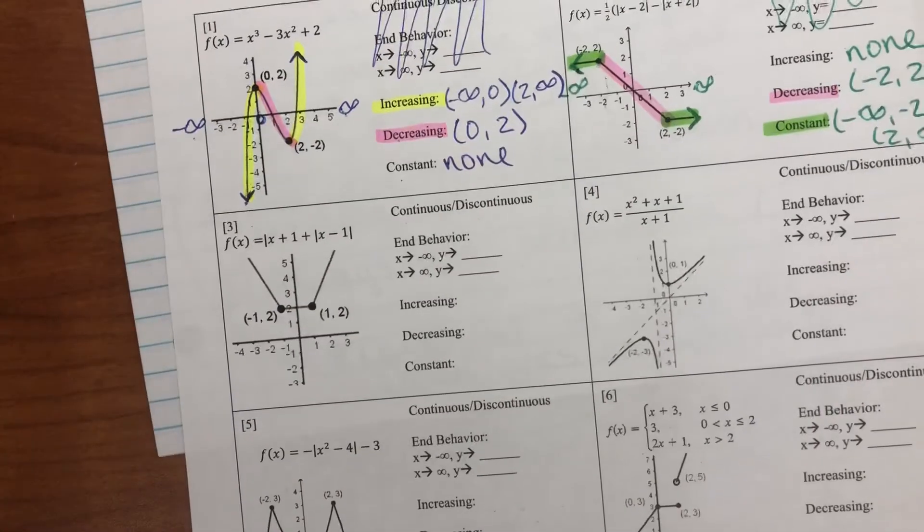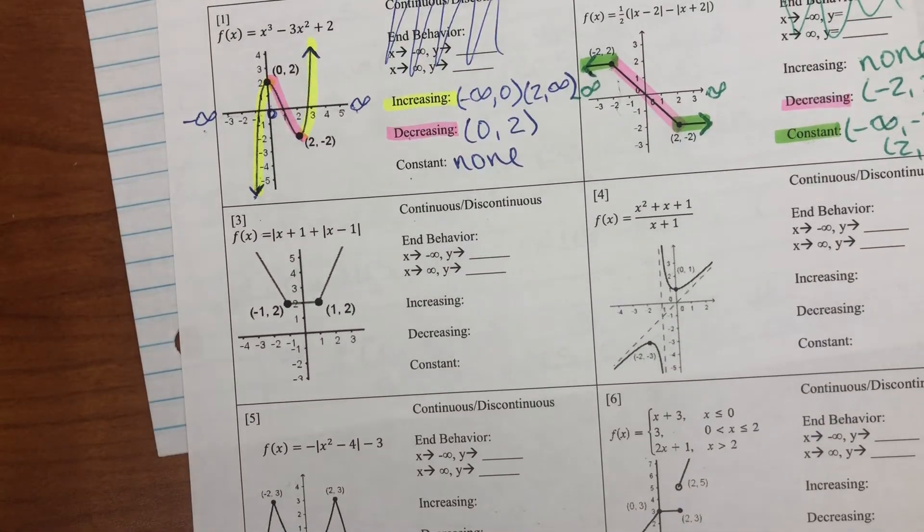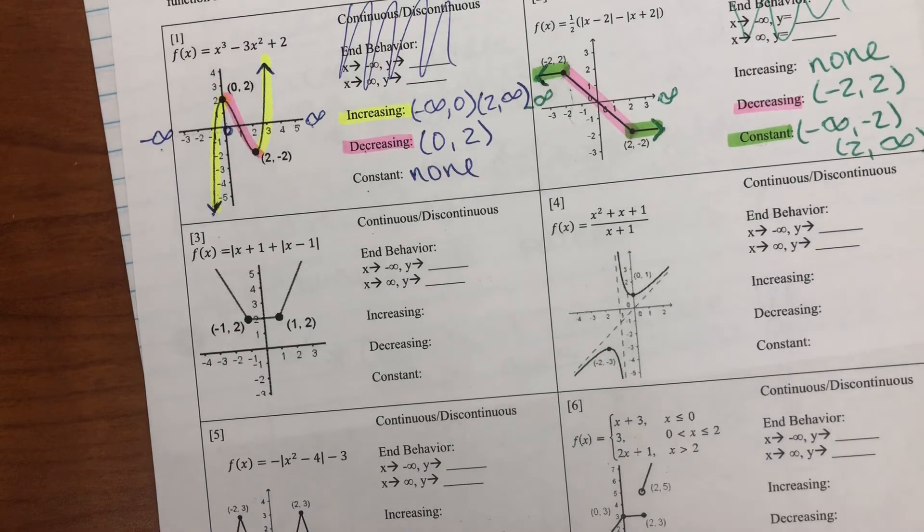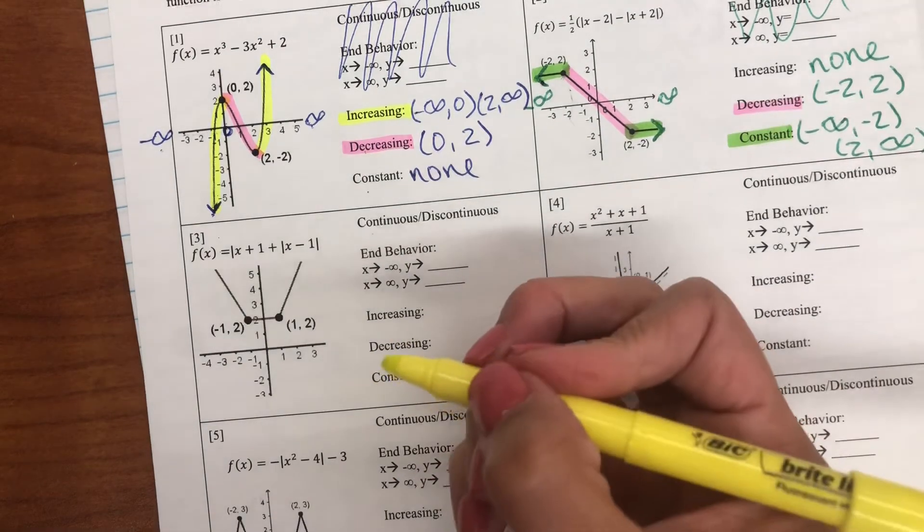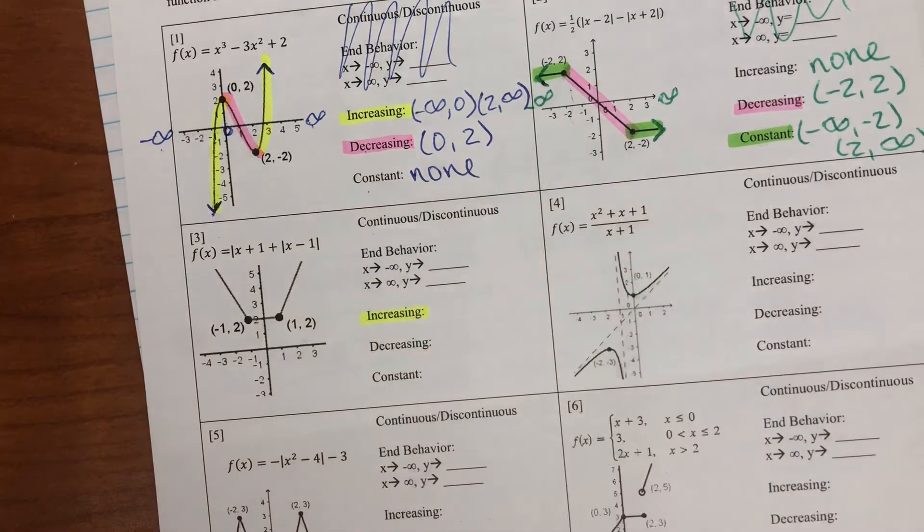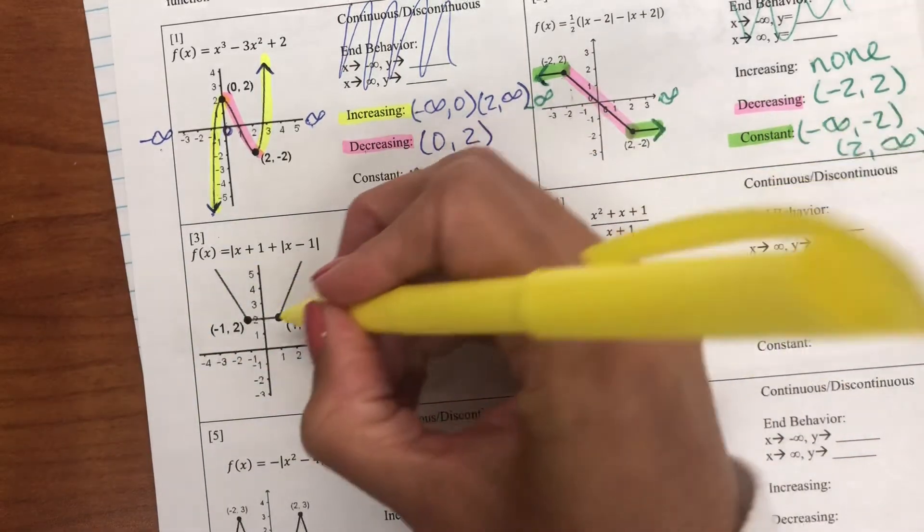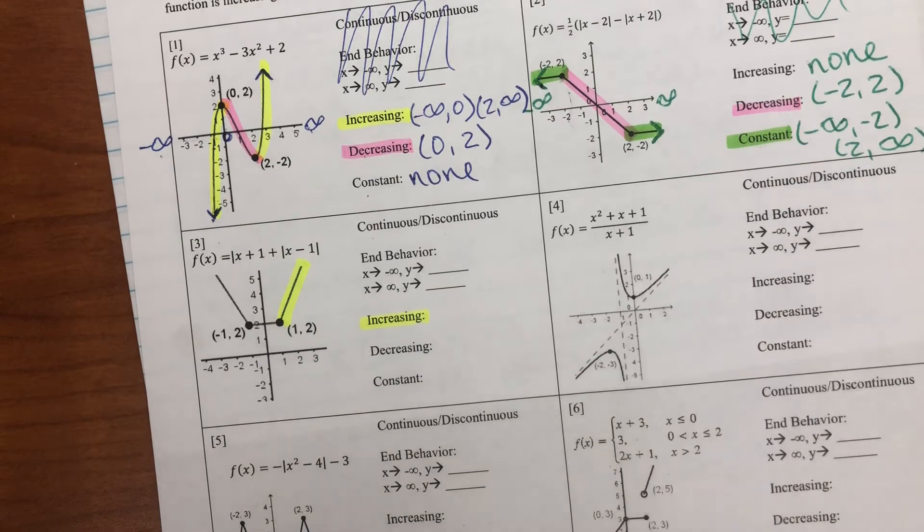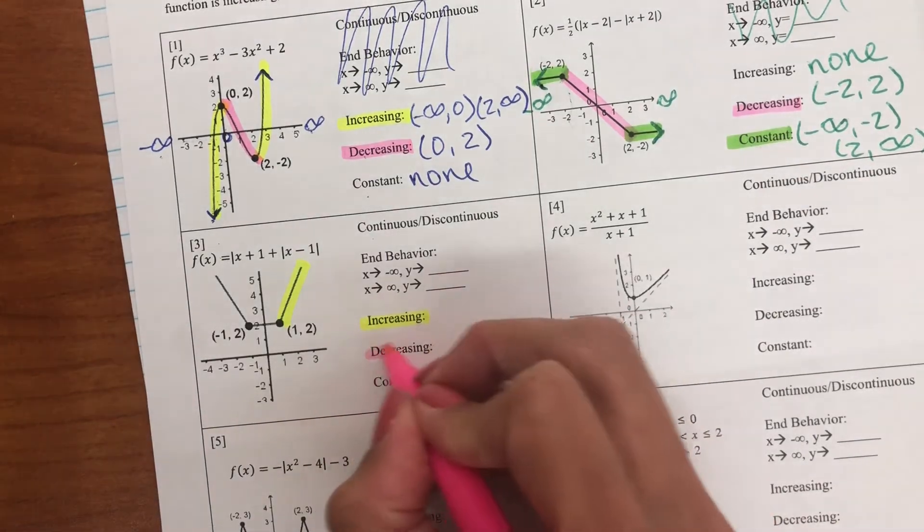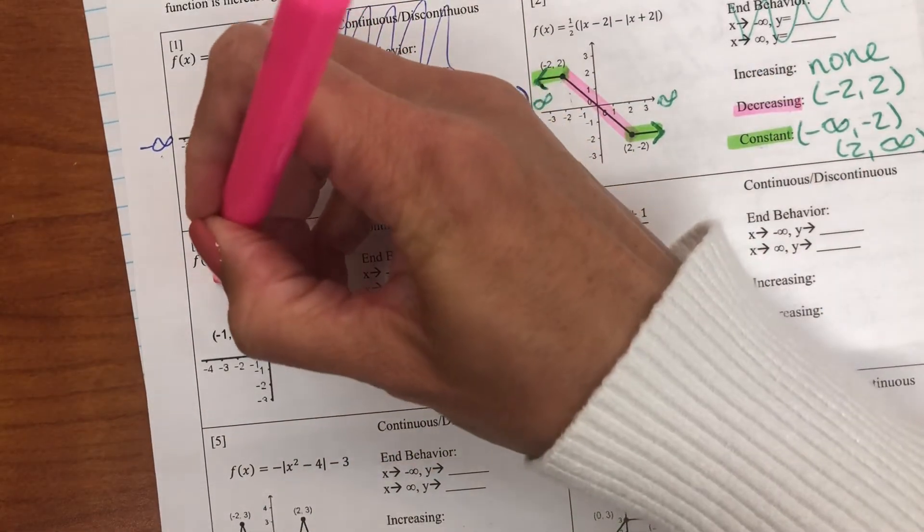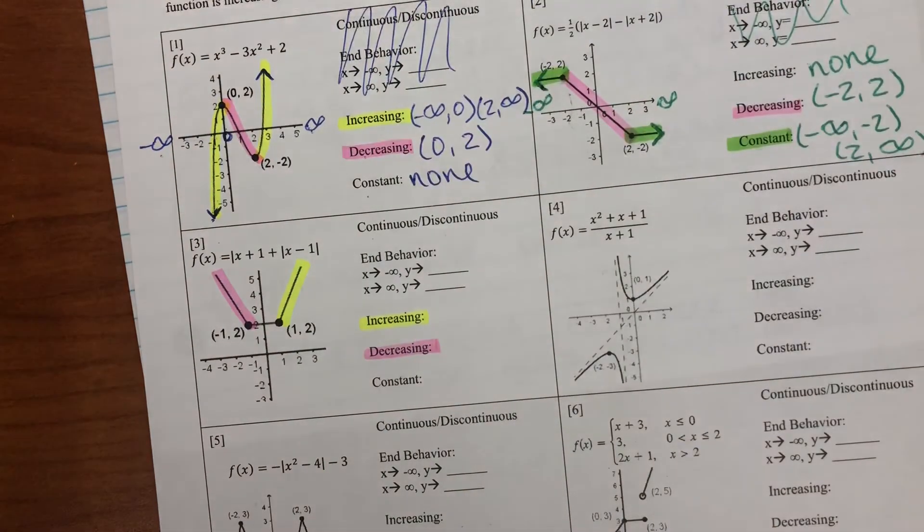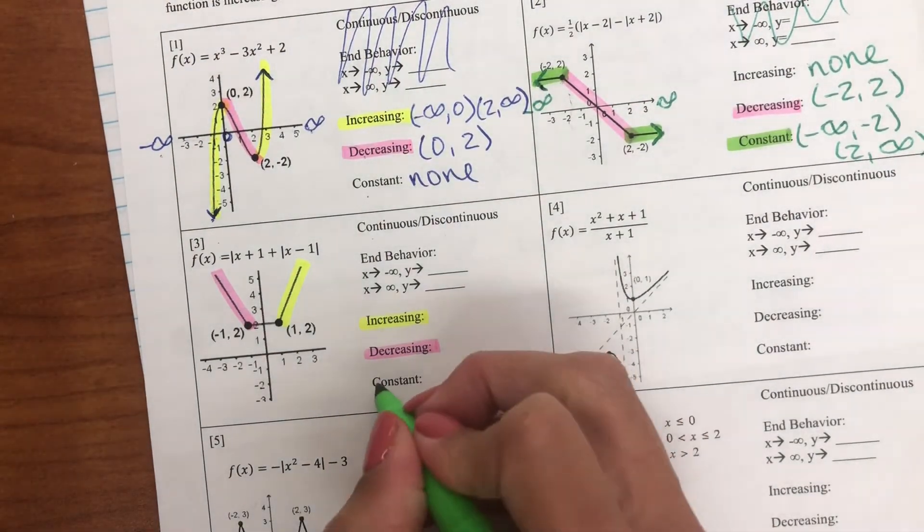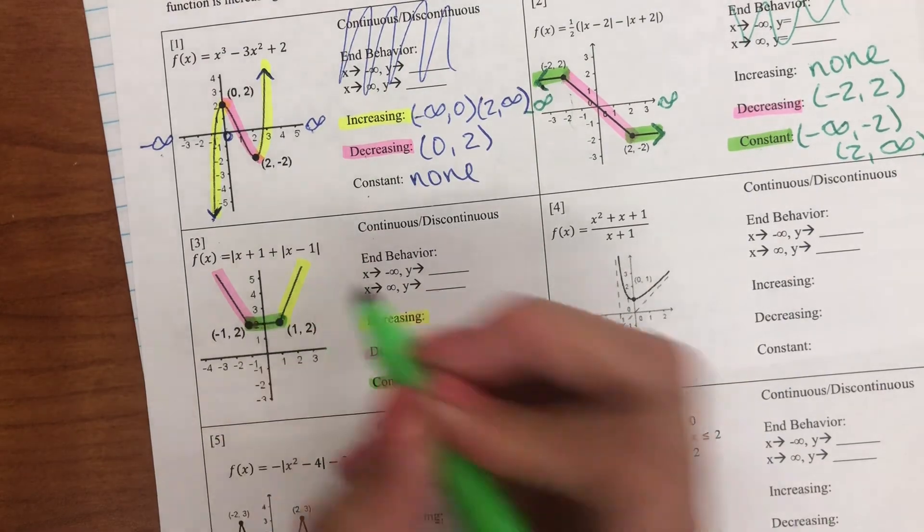Last example. Number three. Increasing. Where is my graph going up? It's going up right here. Decreasing. Graph is going down in that section. And then lastly, constant. Straight across. Right there.